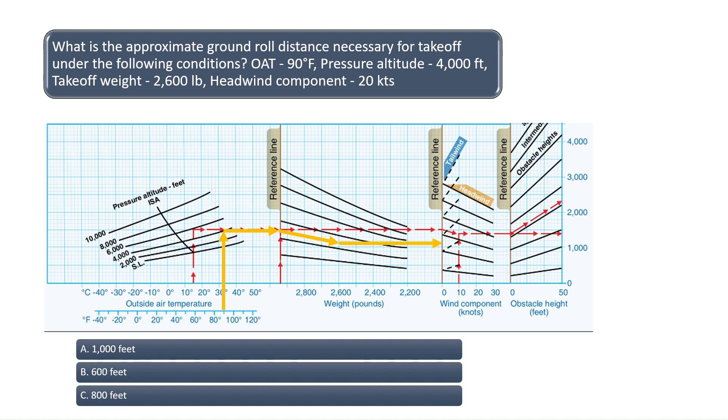Continue drawing the line over to the right until meeting the wind component section. Since there is a 20 knot headwind, draw the line down and to the right until it intersects the 20 knot wind line near the right of the chart. Finally, draw the line to the right.